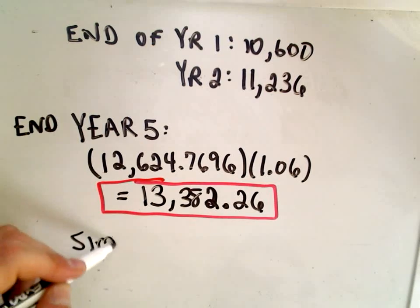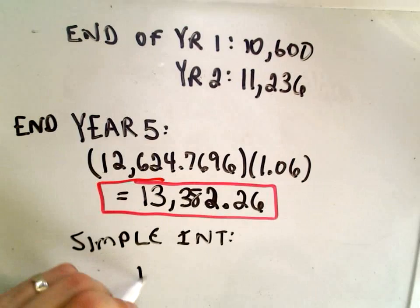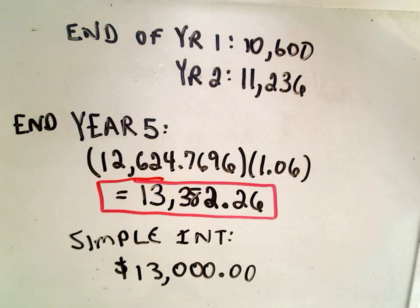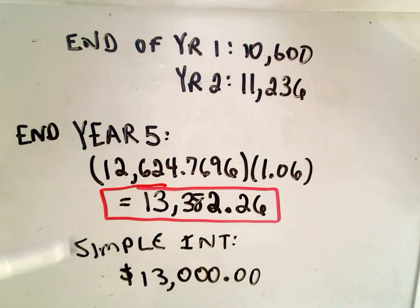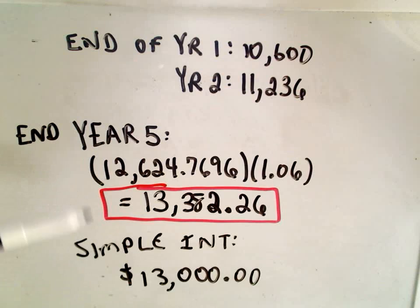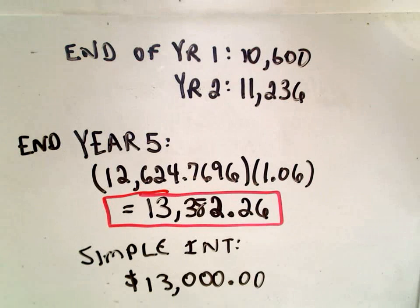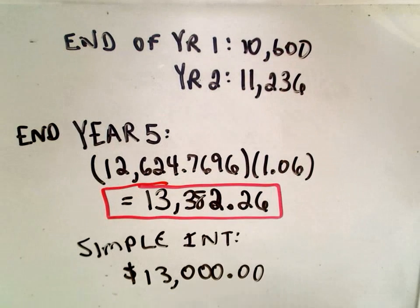Under simple interest we only ended up with $13,000 in the bank, whereas compound interest gives us $13,382.26. This makes sense because the interest is earning interest — it keeps snowballing so you end up with a bigger chunk of change. The key idea is that the principal keeps increasing from year to year, so you're earning interest on a larger and larger amount. I hope this video helps — feel free to post comments or ask questions. Good luck out there.